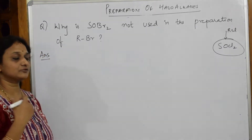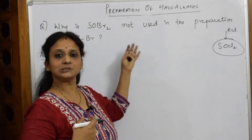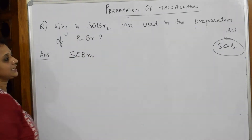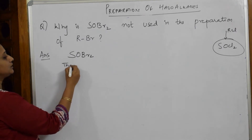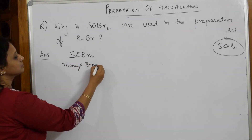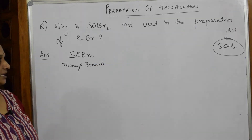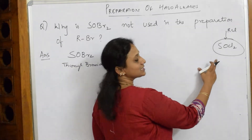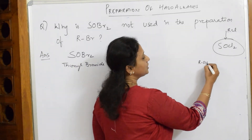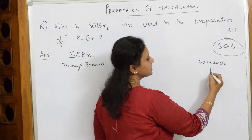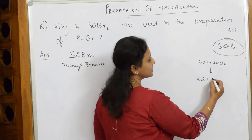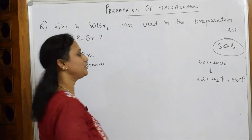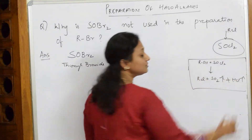So the question is: why is SOBr2 not used in the preparation of RBr? Let us see the reason. As a recap, the reaction R-OH plus SOCl2 gives RCl plus sulfur dioxide gas plus HCl vapors — that was the previous reaction explained.